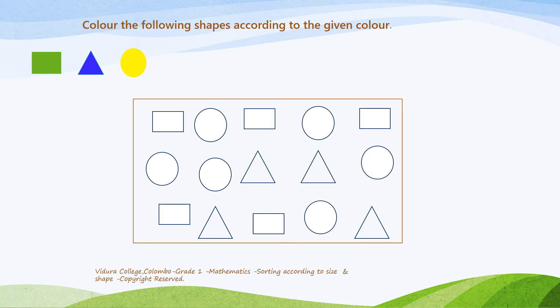First, color the rectangles in green. Then, color the triangles in blue. After that, color the circles in yellow.